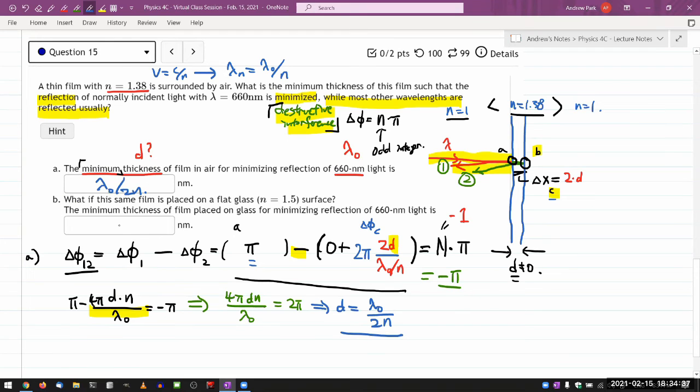Part B has some interesting changes. Let me make the changes in place. The change part B is making is the same film is placed on a flat, and this is the important part, n=1.5 surface. The change I'm making is instead of n being equal to 1 on the right hand side, now it's n equals 1.5. That causes an important change to the relationship. Instead of the index of refraction on the incident side being larger, index of refraction on the incident side is now smaller.